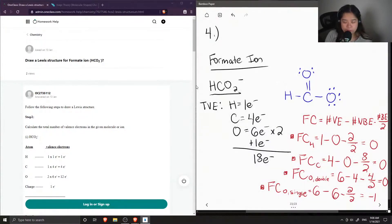So now I know that for the formate ion, the negative charge comes from the single bonded oxygen. So now let's see what the tutor said.